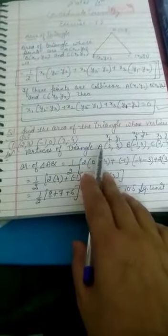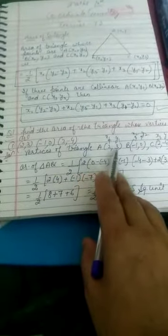Now find the area of triangle whose vertices are these points. Now we have taken the area. Vertices of triangle, this one A, the points of A are x1, y1, x2, y2, x3 and y3.